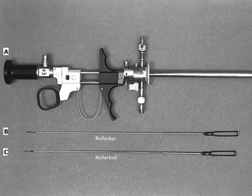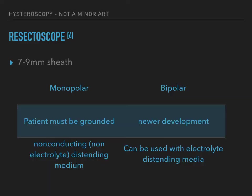Here is an example of a resectoscope and some of its electrosurgical instruments. Resectoscopes typically consist of a 7 to 9 mm sheath. They use radiofrequency electrical energy, which may be either monopolar or bipolar. When a monopolar resectoscope is used, the patient must be grounded and a non-electrolyte distending medium must be used. Bipolar resectoscopes are a newer development and can be used with electrolyte distending media.